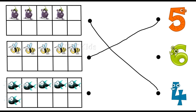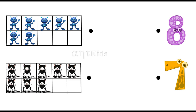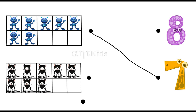How many fishes in this tens frame? Six fishes. How many robots in this tens frame? Seven robots. How many cats in this tens frame? Eight cats.